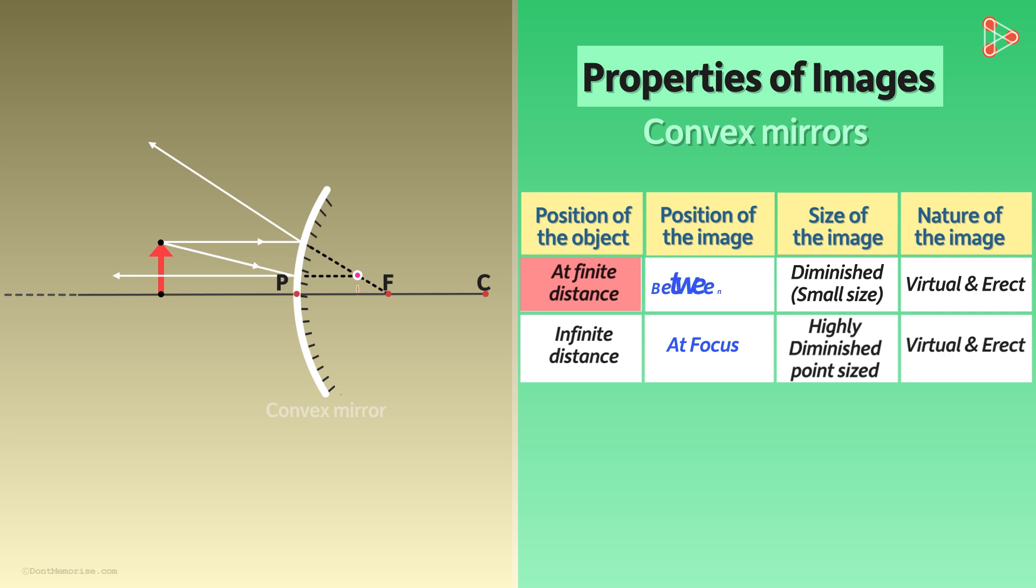Okay, so let's quickly join these image points to get the complete image of the object. If we measure the length of the object and the image, we will find that the object's size is greater than its image. So we say that the image is diminished.